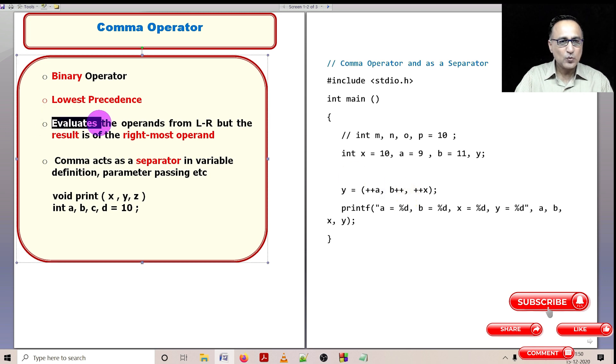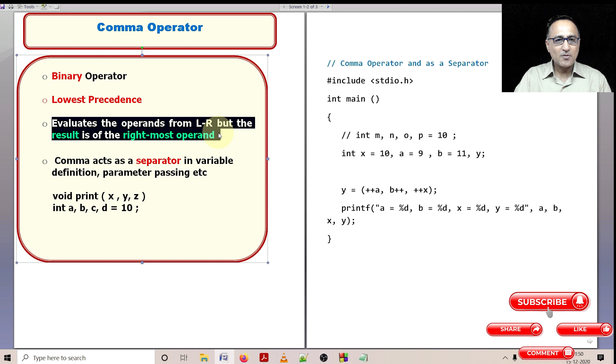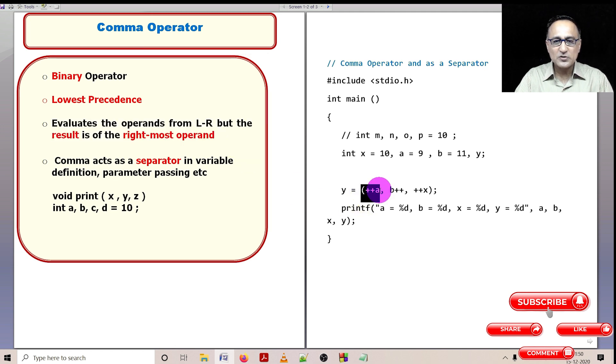Now let's go back to this working here. It evaluates the operands from left to right, but the result is of the rightmost operand. So what is the first operand? This is one operand, b++ is the second operand, ++x is the third operand. So first it evaluates ++a. So a is 9, it ends up becoming 10. b is a post increment, so after the semicolon b will end up becoming 12. x is 10, so it's a pre increment, x becomes 11. And the value of x which is 11 will get copied to y. That's what this line really means.